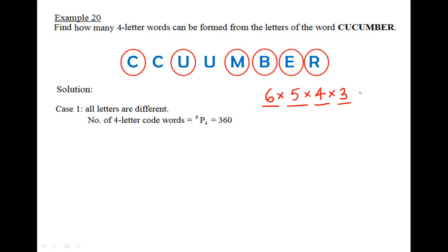Case number two is having one pair of repeated letters. So what does it mean? It means that, let's say, I were to have C and C to be in the four-letter word, and the remaining two have to be different because we only need one pair of repeated letters, which in this case is C and C. So the final two slots I can put in either U, M, B, E, or R, any two of them.